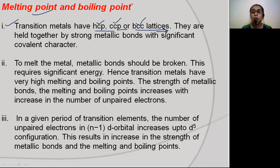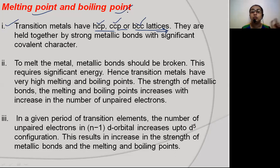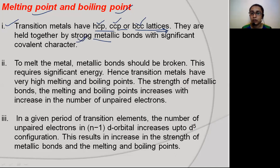To melt a transition metal, we need to break the metallic bonds. Since these metallic bonds are strong, more energy is required to break them, meaning the melting and boiling points are higher. The strength of the metallic bond depends on the number of unpaired electrons available for bonding.